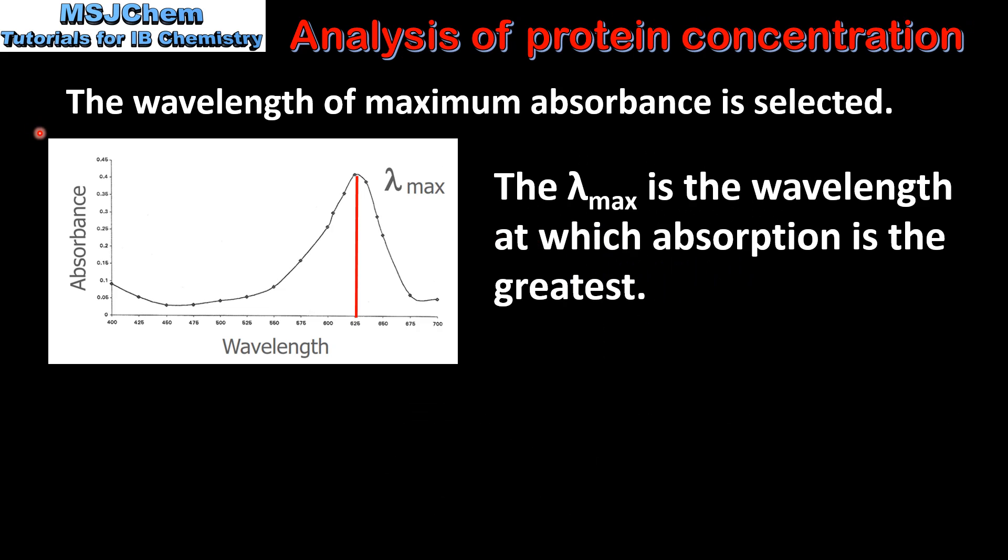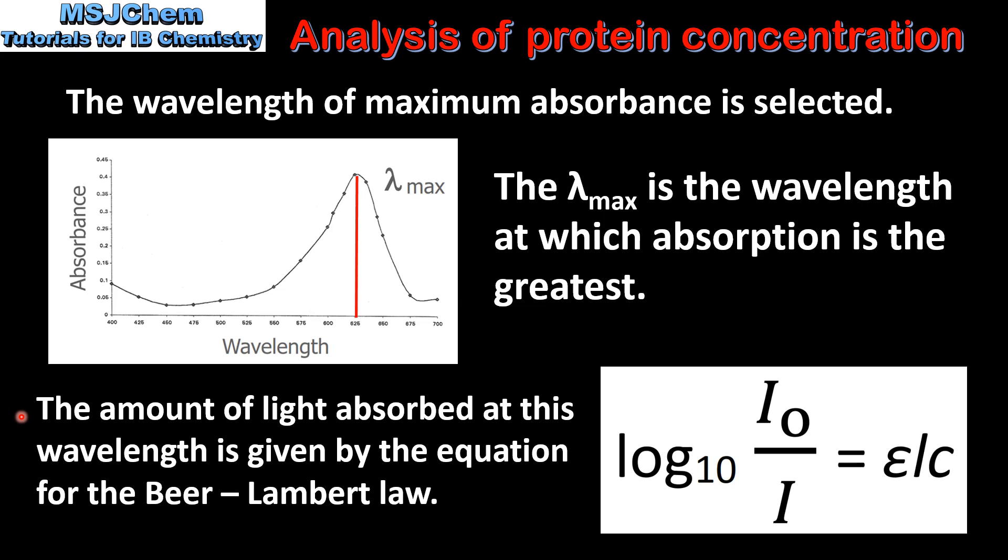In the spectrophotometer, the wavelength of maximum absorbance is selected. The λ max is the wavelength at which absorption is the greatest. The amount of light absorbed at this wavelength is given by the equation for the Beer-Lambert law: log₁₀(I₀/I) = εℓc.